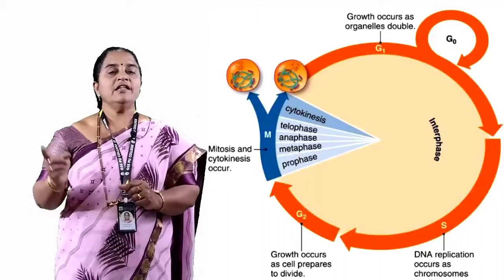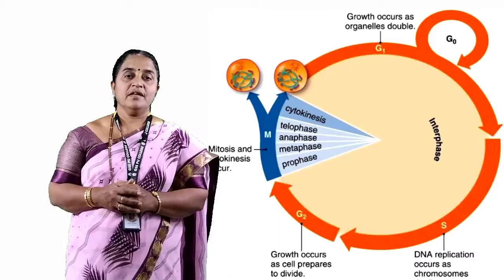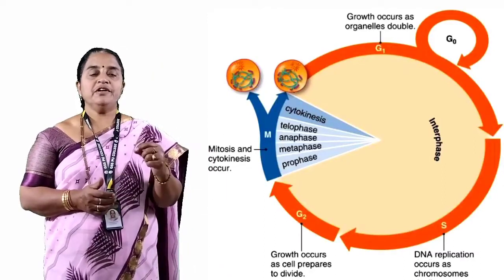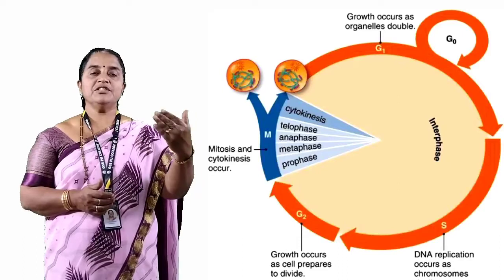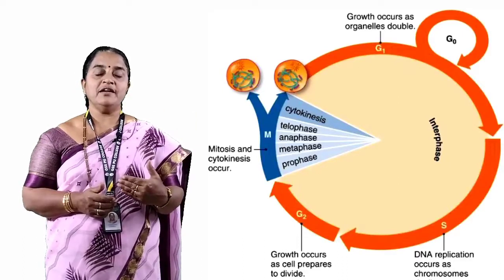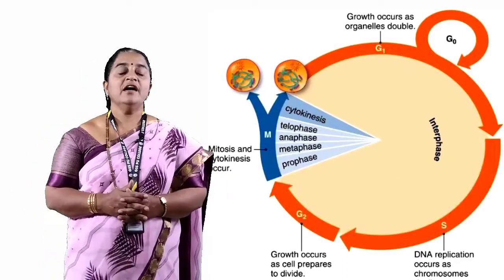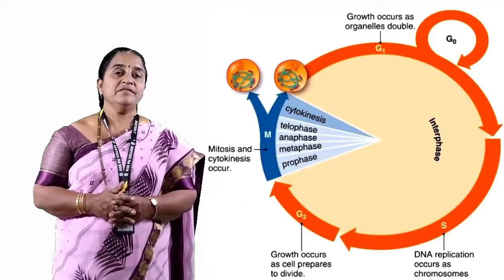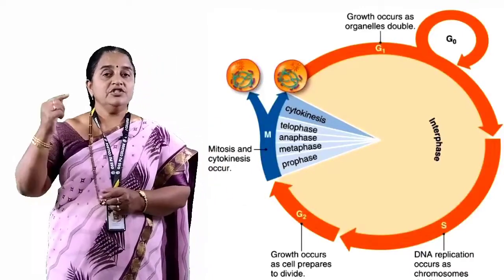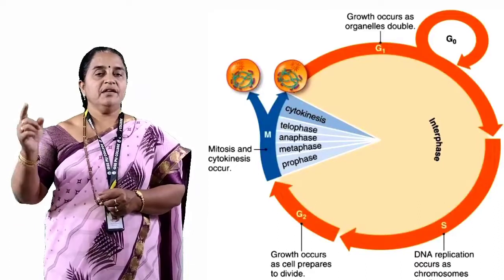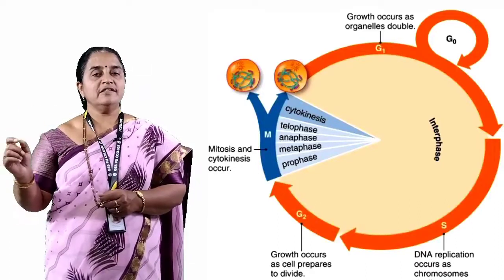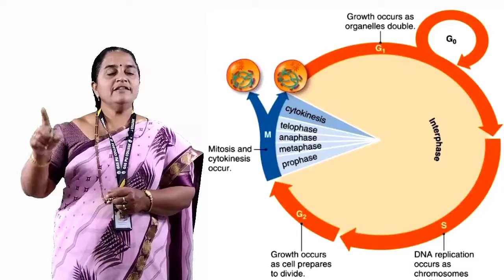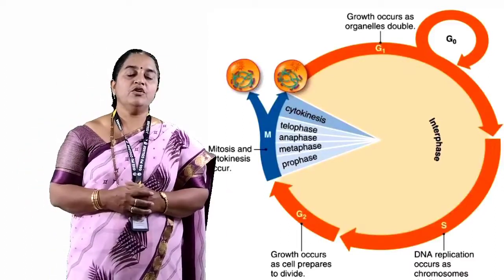Immediately after the synthesis phase comes G2 phase, where again transcription and translation continue and a set of polypeptides necessary for the division phase are prepared. Thus, G1 is Gap 1, S is the synthesis phase, and G2 is Gap 2 phase. All these phases are genetically controlled.